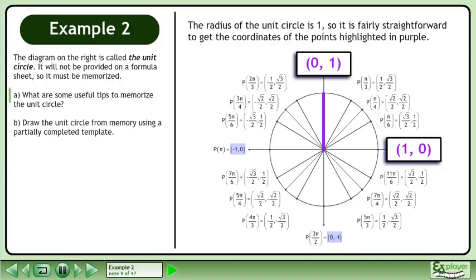On the negative x-axis, at an angle of π radians, we have the coordinates.